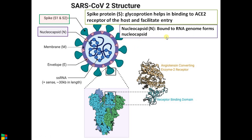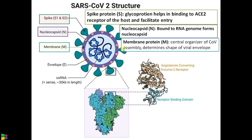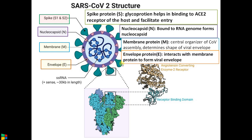The second part is the nucleocapsid — proteins bound to the RNA genome forming the nucleocapsid. Third is the membrane protein, which is the central organizer of coronavirus assembly and determines the shape of the viral envelope. The fourth part is the viral envelope — the envelope protein interacts with membrane protein to form it. The genome is single-stranded, positive-sense RNA of approximately 30 kb. The structure is similar to MERS and SARS-CoV-1, but sequence and amino acid data suggest distinct differences causing this massive spread.